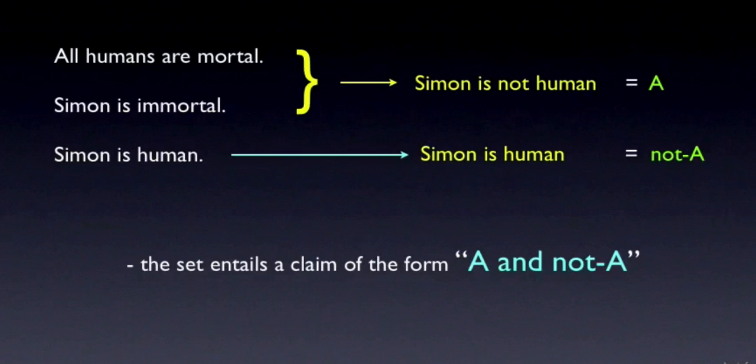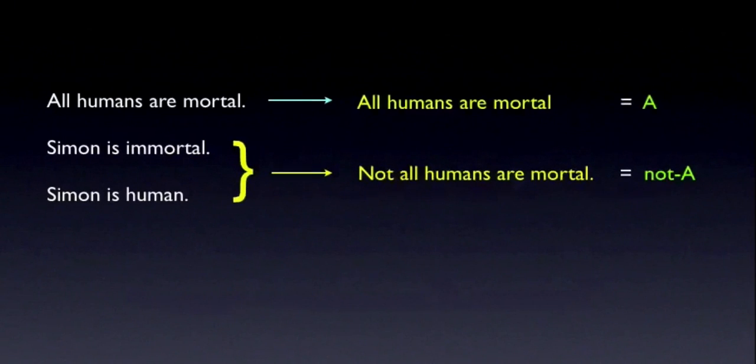We can run this with any pair of claims in the set. If we set the second and third claims as true, for example, then we can infer that the first must be false. If Simon is immortal, and if Simon is human, then it must be the case that not all humans are mortal, which contradicts the first claim.